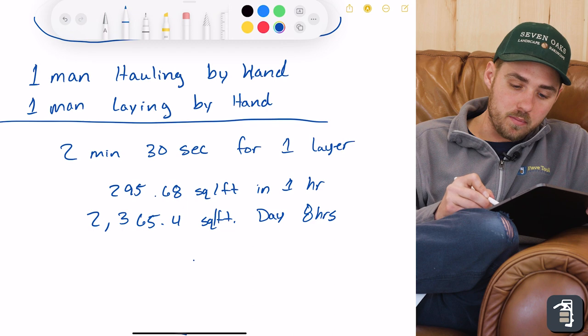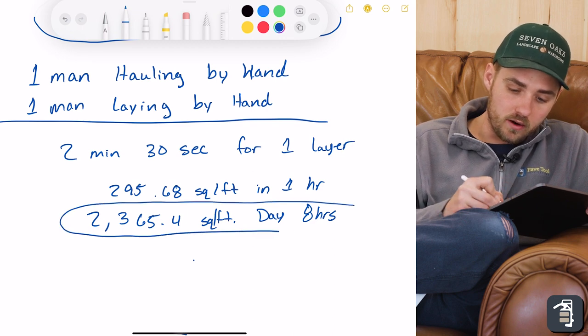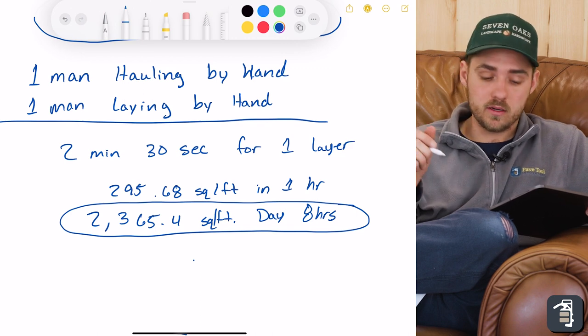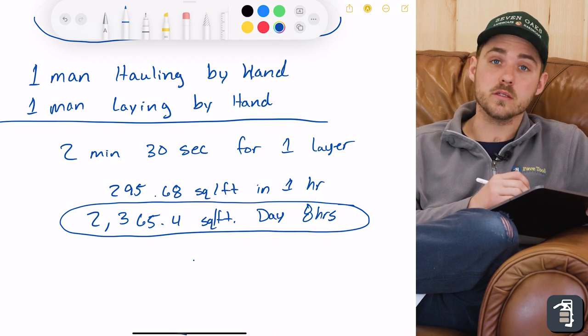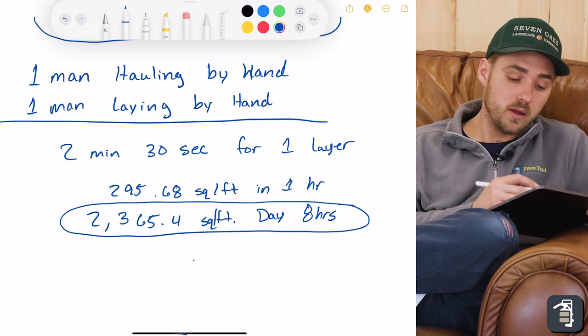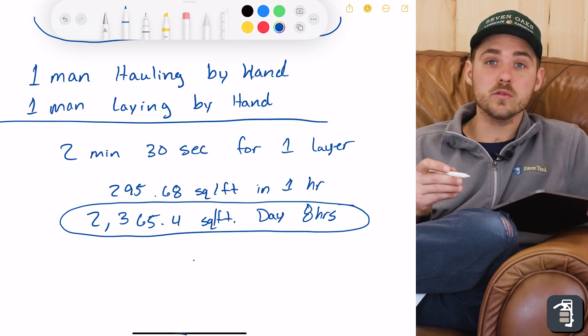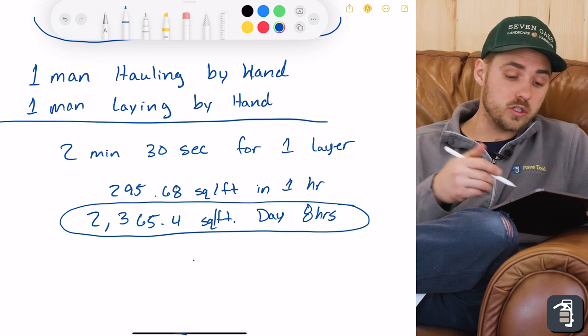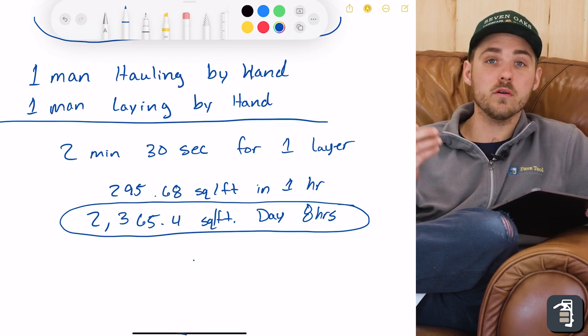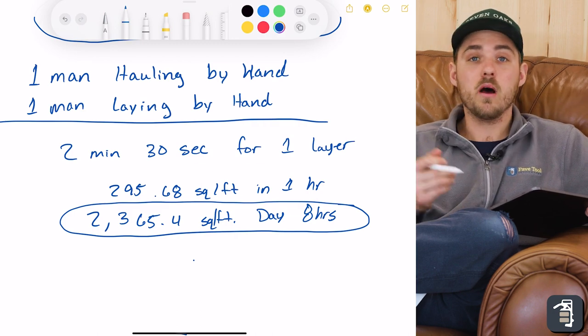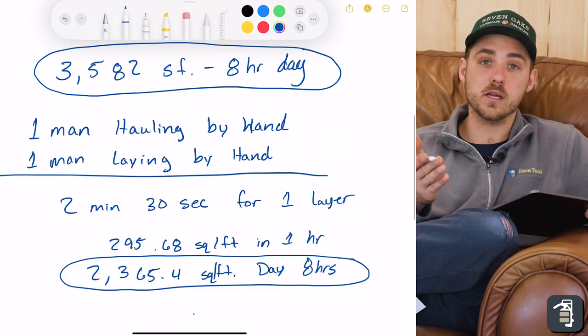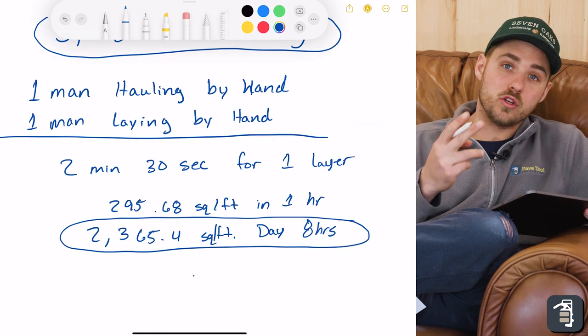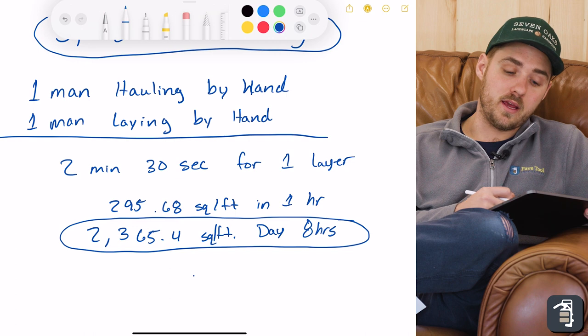Now, if you can keep up this pace right here all day in five days a week or six days a week, I'd be quite impressed. These numbers are based off of no variables, no problems, no headaches, no issues with the guy slamming his finger or doing something. Then he's down for an hour. You know what happens on a job site, you know what's going on. You're able to lay 2,300 square feet with two guys laying by hand.